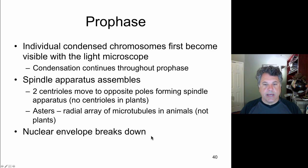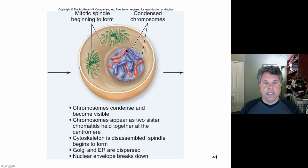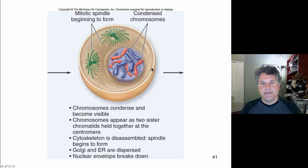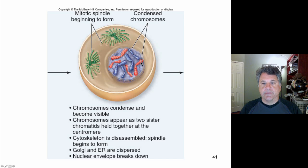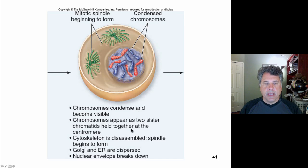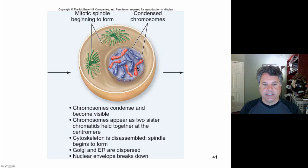We see that in prophase the chromosomes are condensing. In this diagram the chromosomes are not shown as replicated — but in fact they are. Each chromosome at this phase consists of two chromatids. That's a mistake in this slide you should recognize. The diagram states there appear two chromatids but doesn't show it correctly.